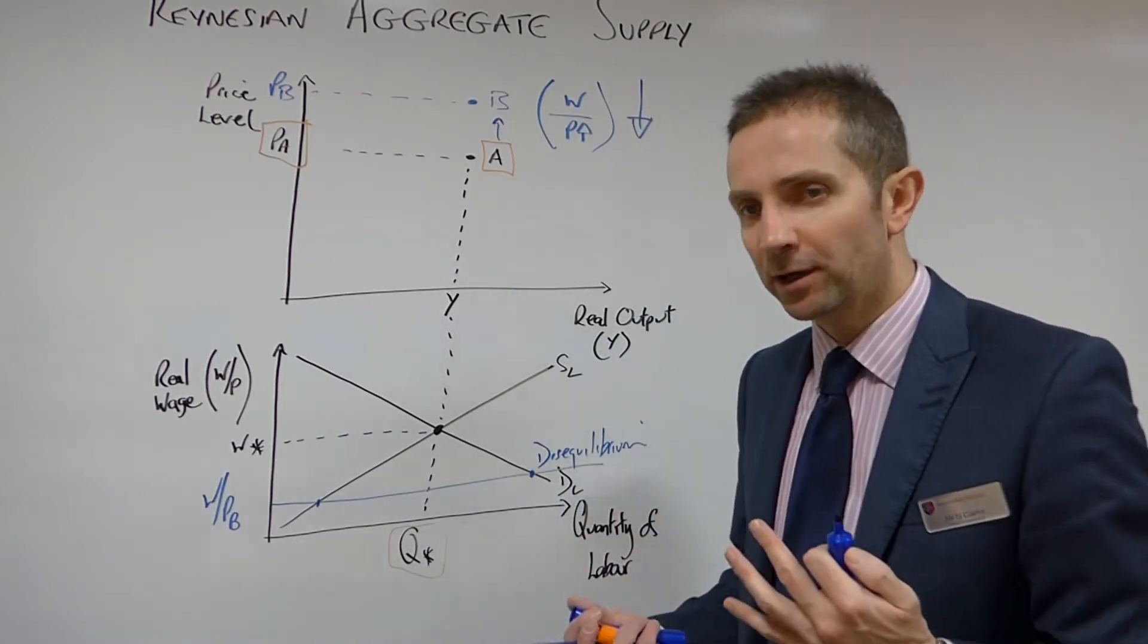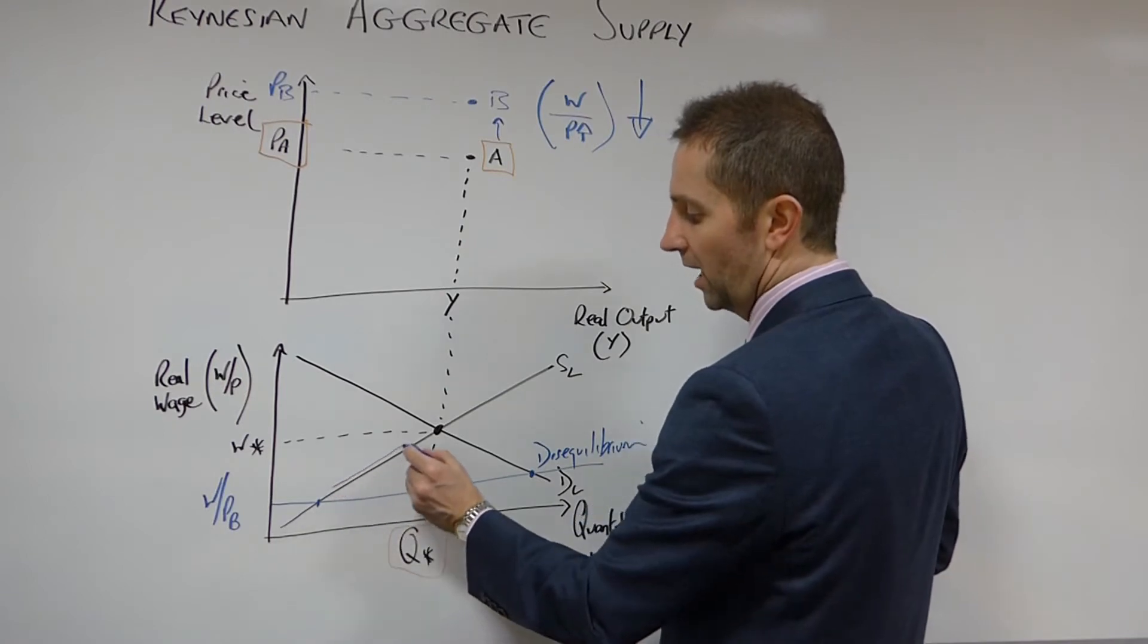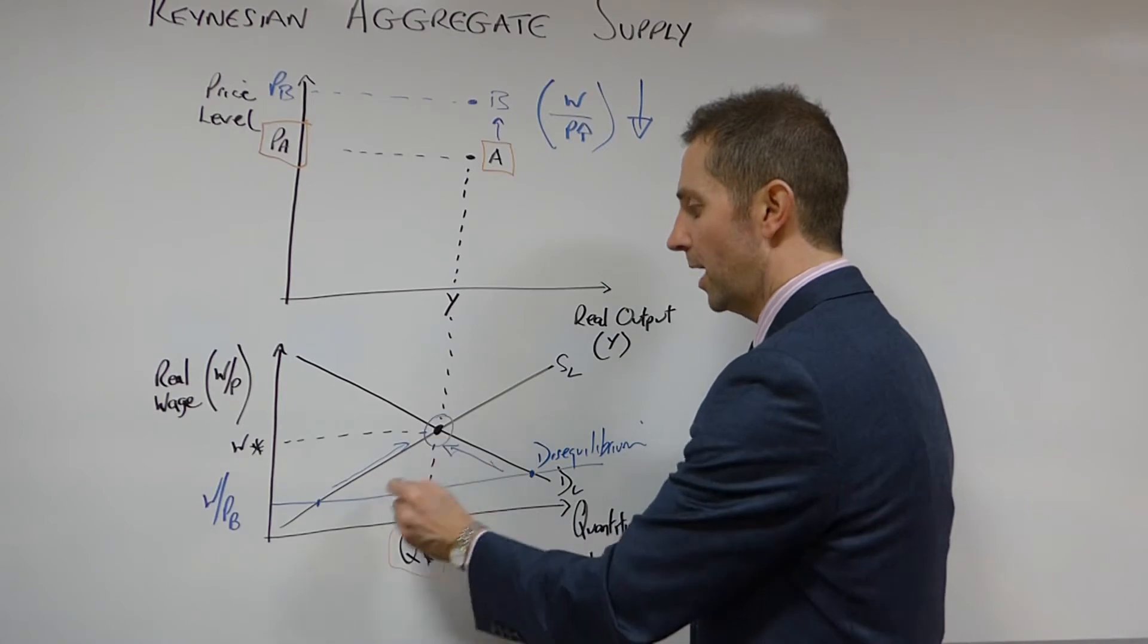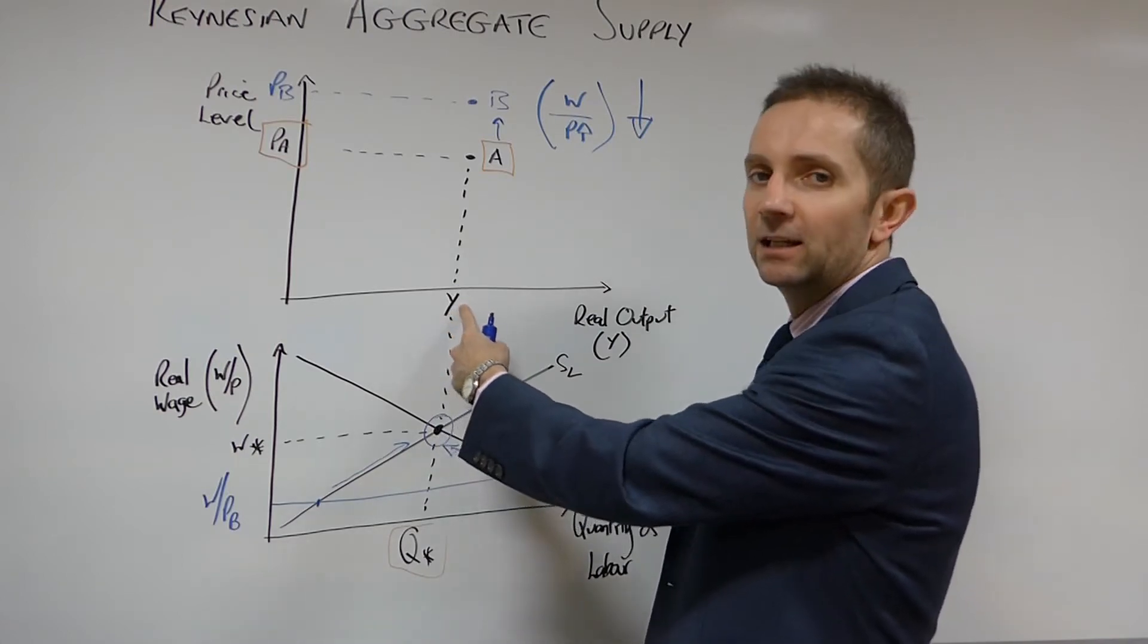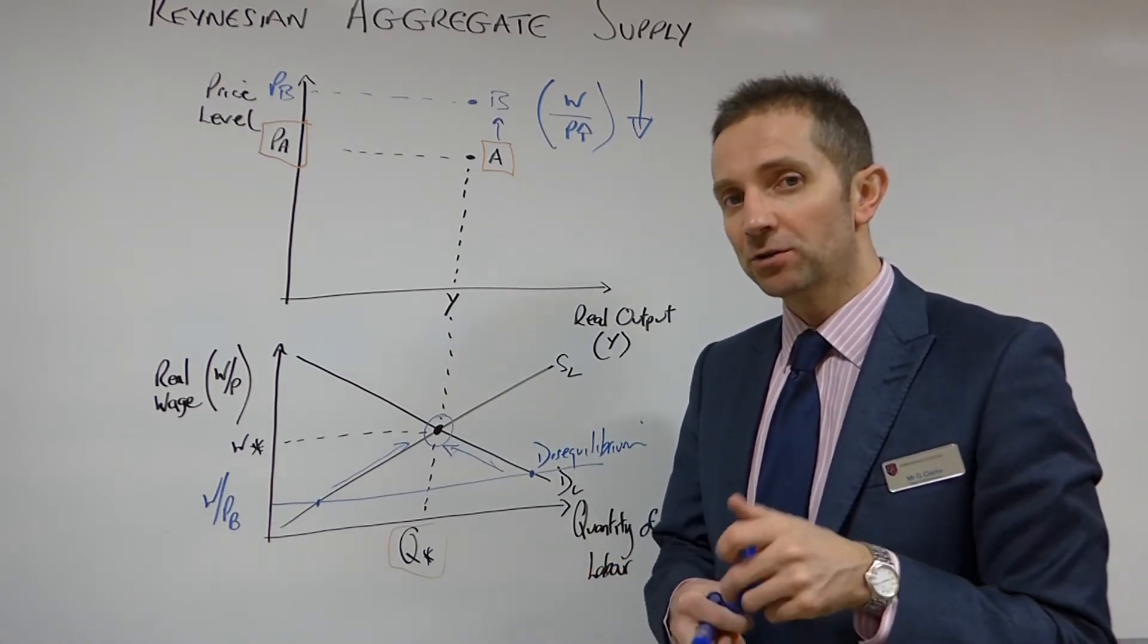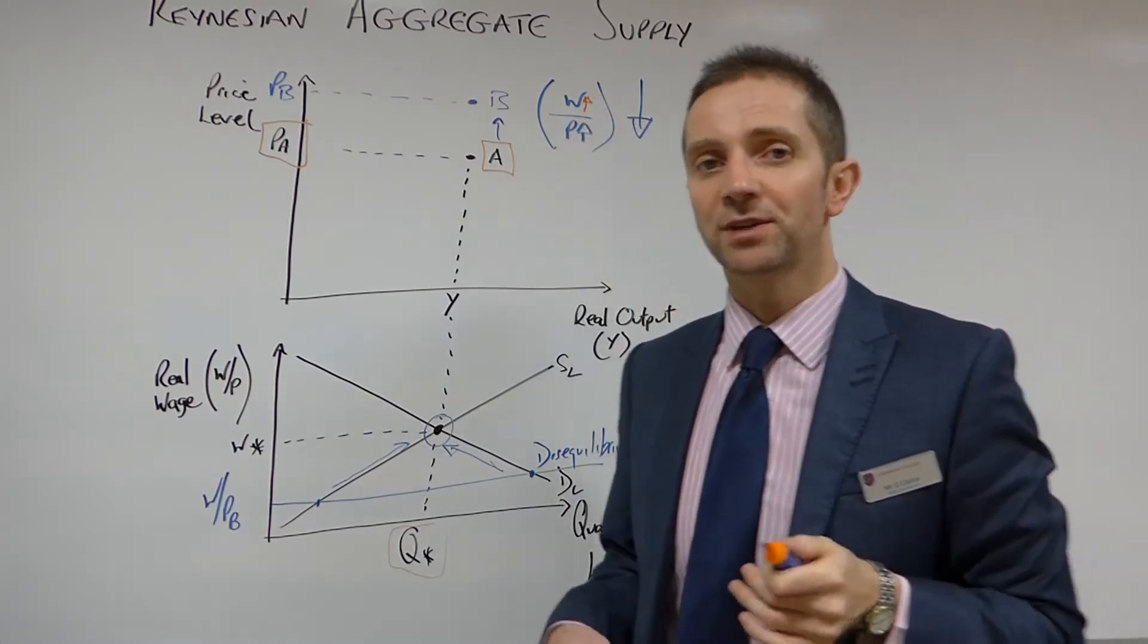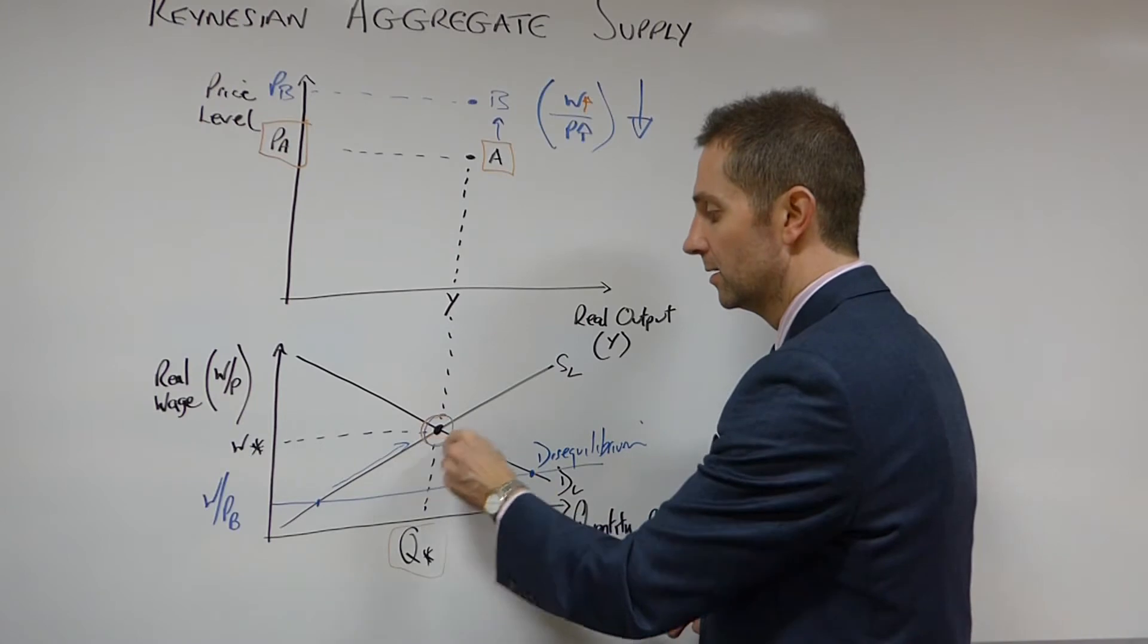In order to restore equilibrium, as was the case in the classical aggregate supply curve, in the classical model, what we need to see happening is we need to be moving along these curves, moving up the supply curve, up the demand curve, in order to restore equilibrium back at Q star, W star, which would therefore put us back in line with this level of real output Y. So what needs to happen in order to restore the equilibrium? We've seen that price has gone up. Therefore, in order to restore the equilibrium, the money wage needs to go up. If price rises by 10%, the money wage needs to rise by 10% also. That would happen and would restore equilibrium back to this point.